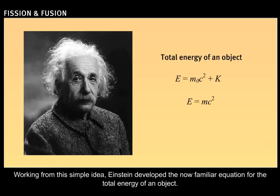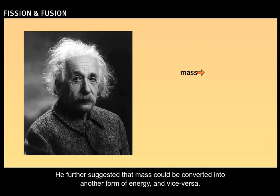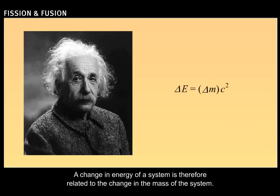Working from this simple idea, Einstein developed the now familiar equation for the total energy of an object. He further suggested that mass can be converted into another form of energy and vice versa. A change in energy of a system is therefore related to the change in the mass of the system.